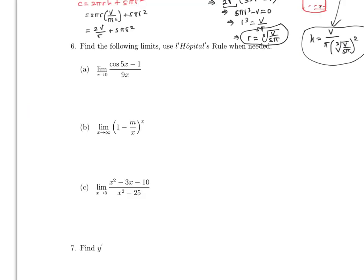For this limit, you take the limit. Plugging in gives 1 minus 1 over 0, which is technically 0/0, so you can use L'Hôpital's rule. The limit as x goes to 0: the derivative of cosine is minus 5 sine 5x. This equals 0 over 9, which is 0. That's the limit.